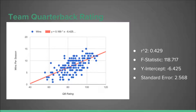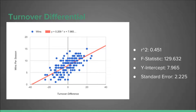Team quarterback rating had the second greatest R-squared of all the X variables that we tested at .429. This tells us that the relationship between quarterback rating and wins is fairly strong in relation to the other variables that were tested.